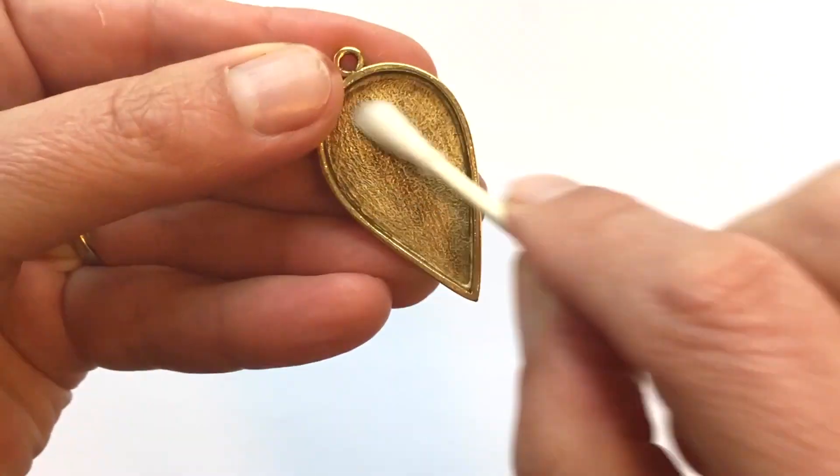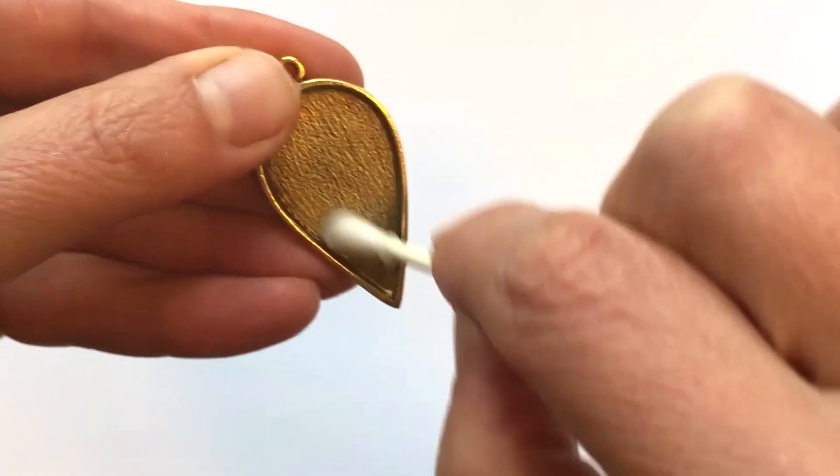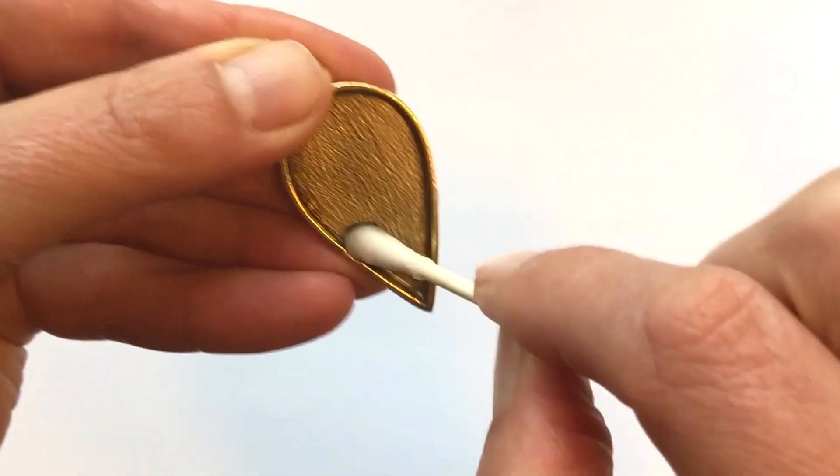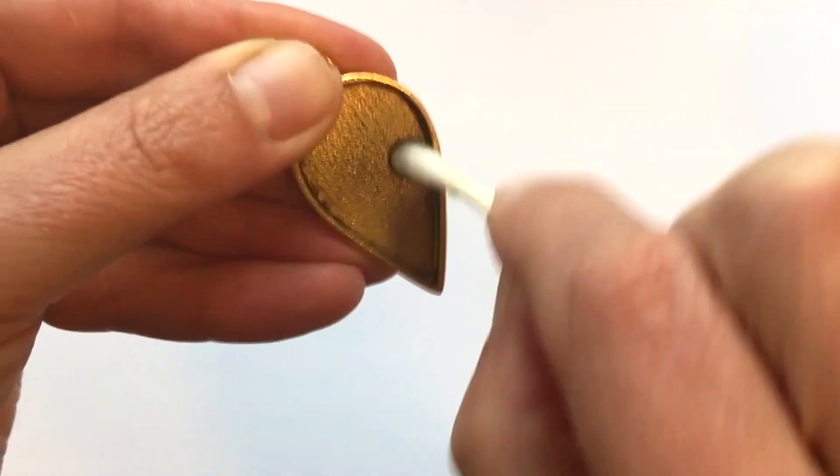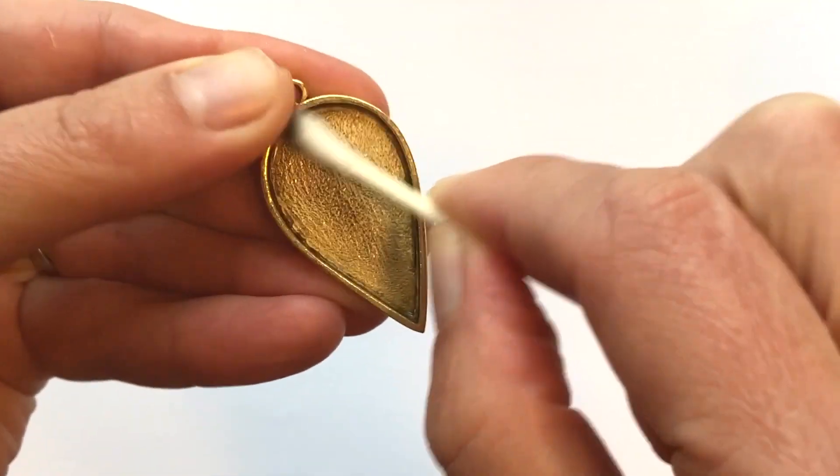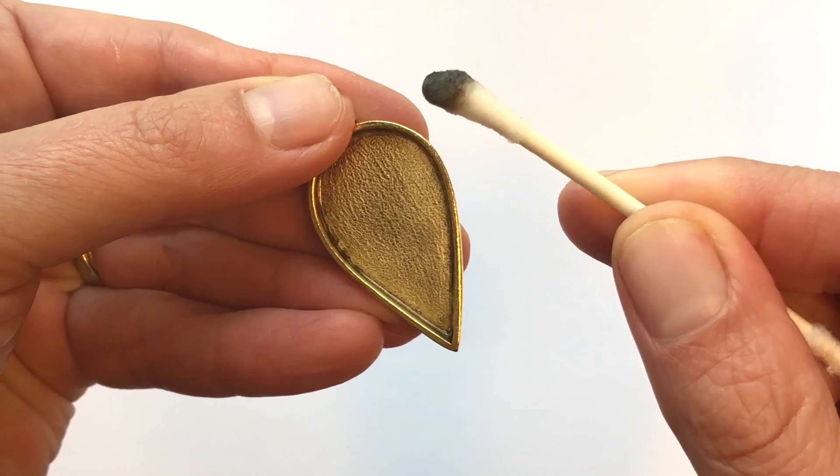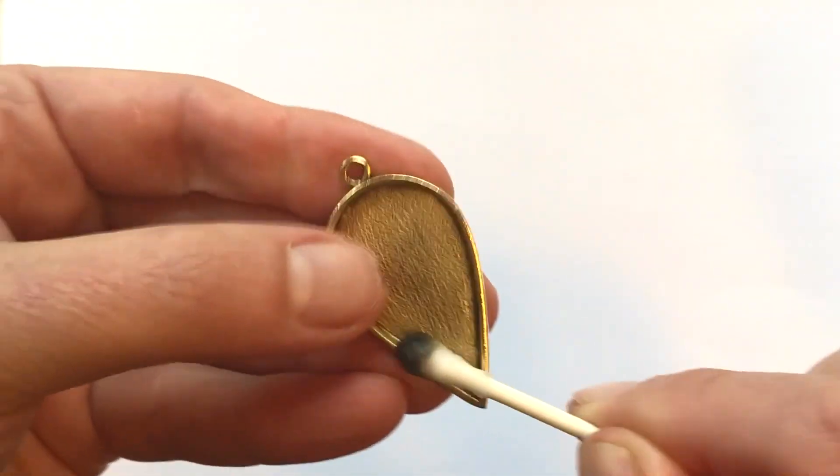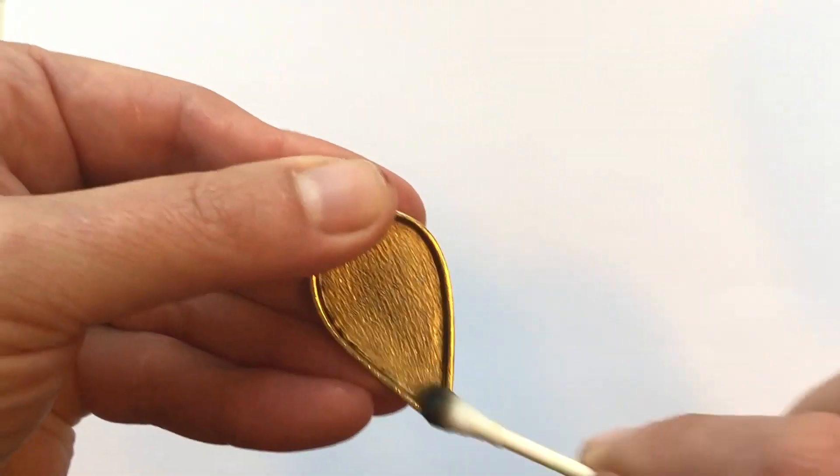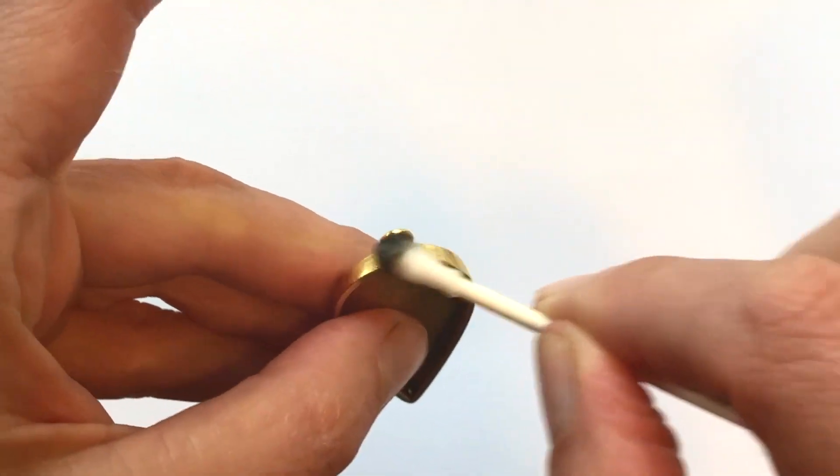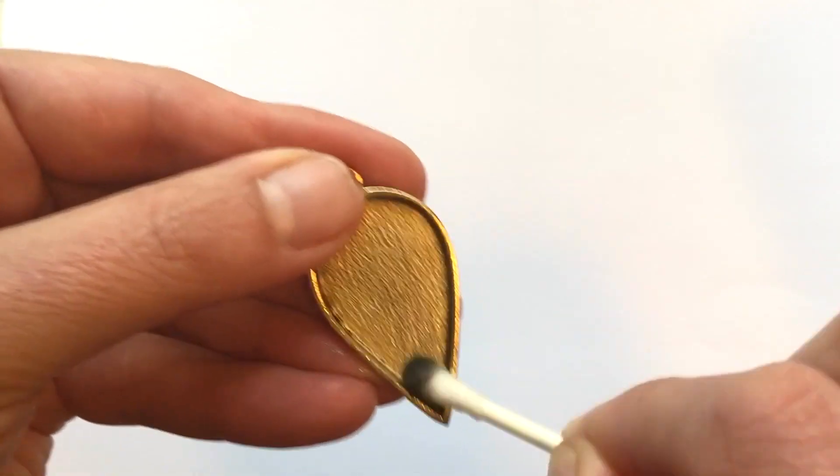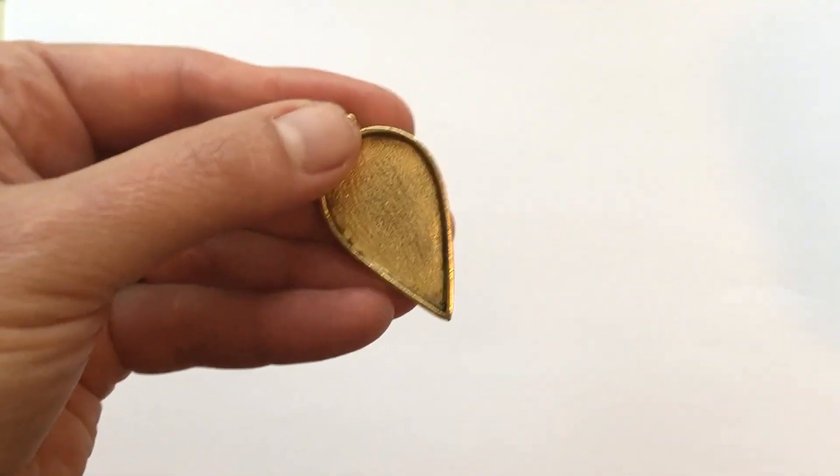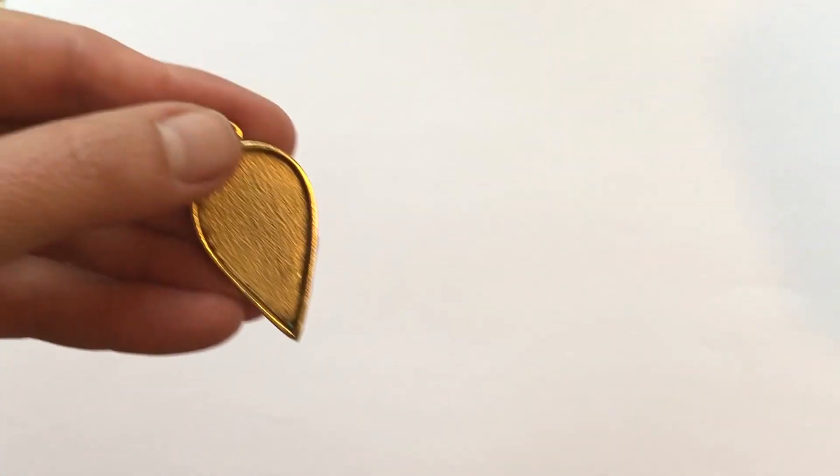Then just place it down inside. You can see I'm just getting that whole base of the finding nice and wet with the rubbing alcohol and you can see that it comes off very easily. I'm placing a little bit of rubbing alcohol in the base, around these edges, and up here is where it tends to gather that oxidization.